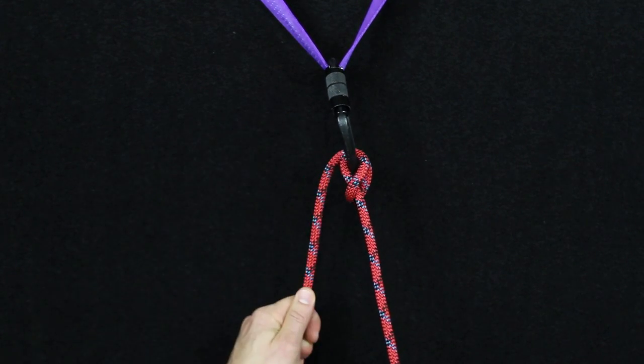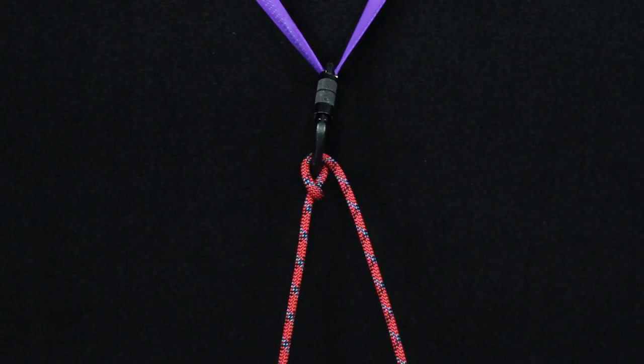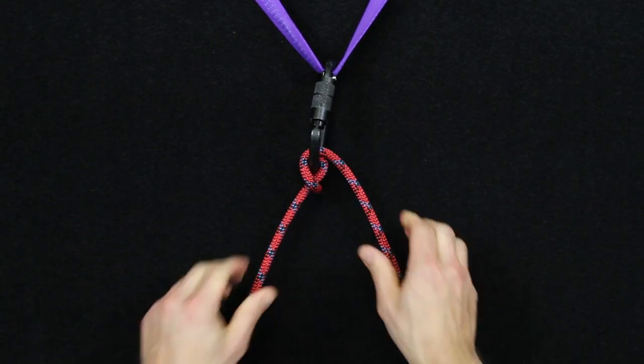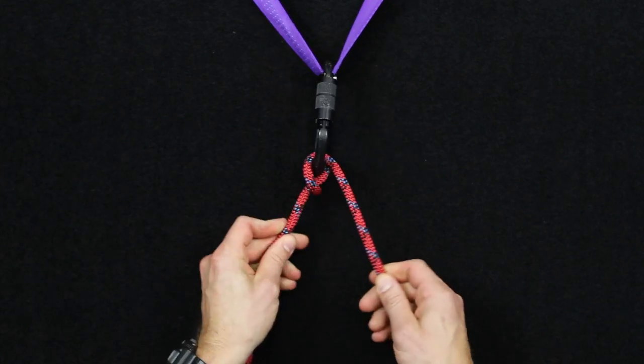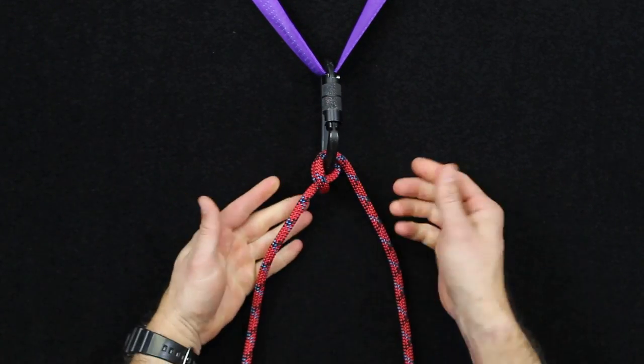So again, flip it, straighten it up, pull from this side. Flip it, straighten it up, pull from that side. So it's very reversible in that sense that it could be used to belay from either direction, which is a nice feature of this.